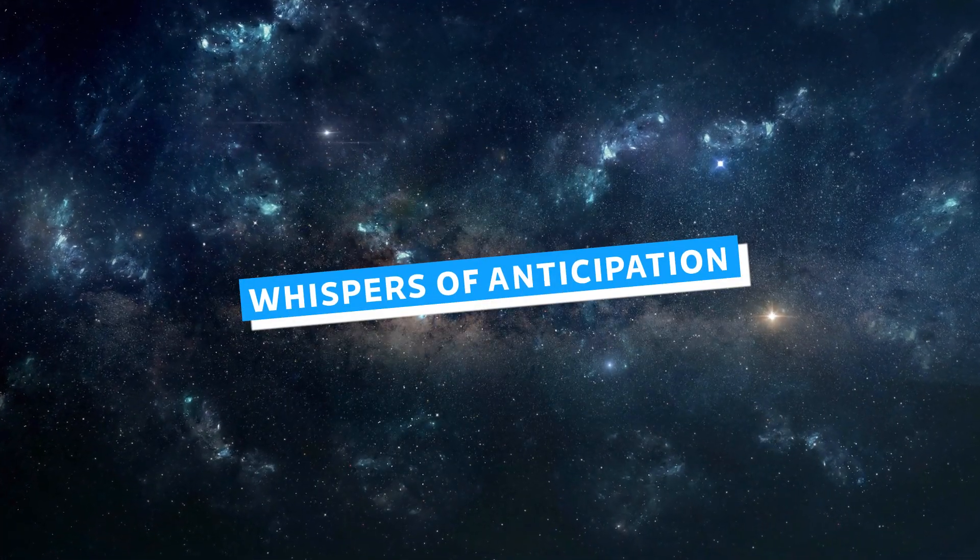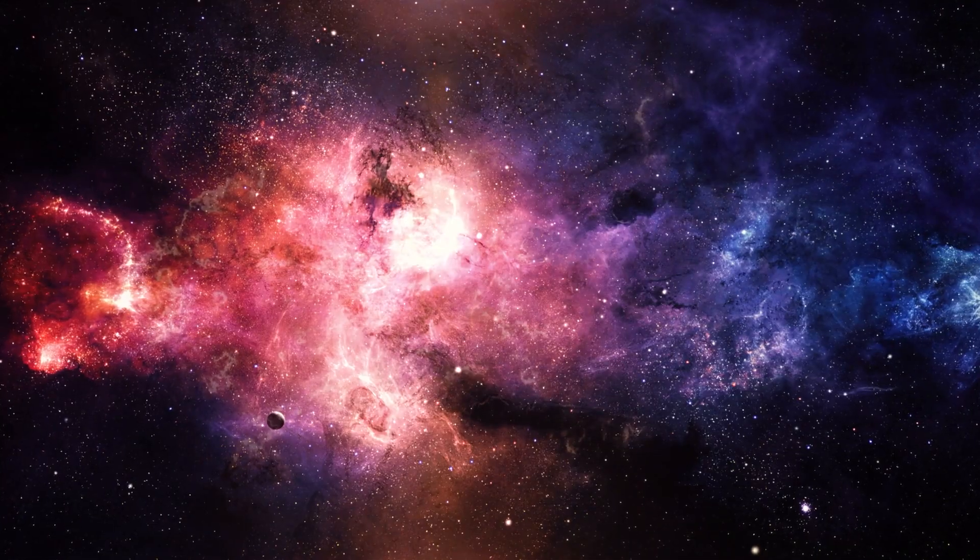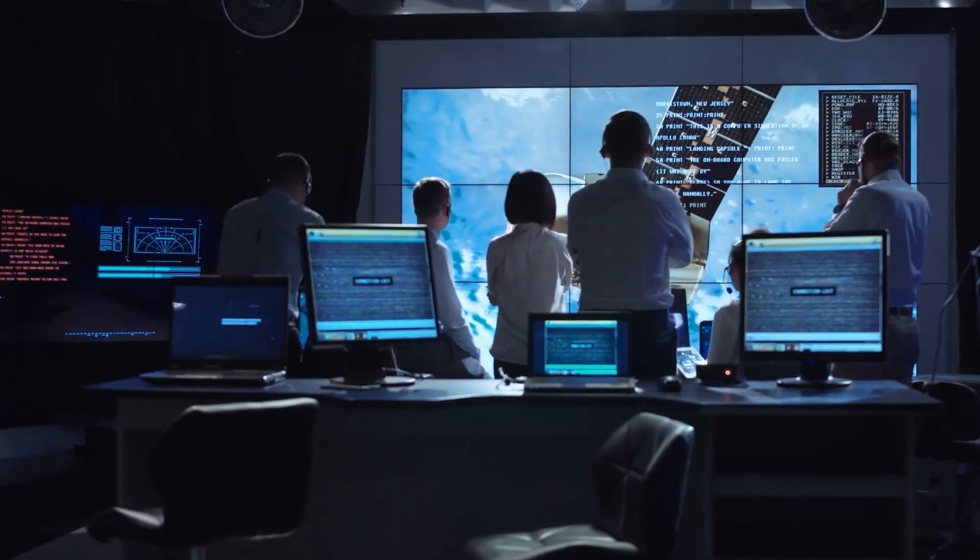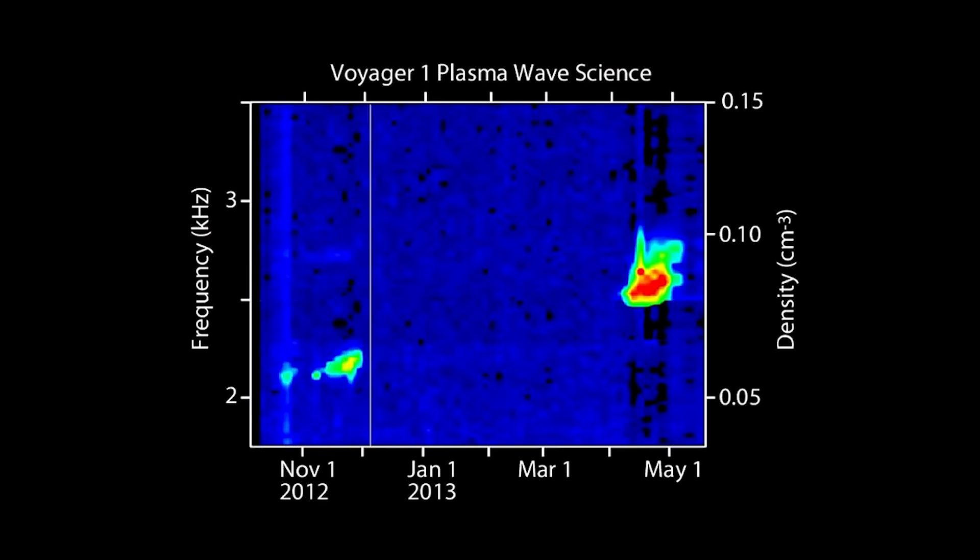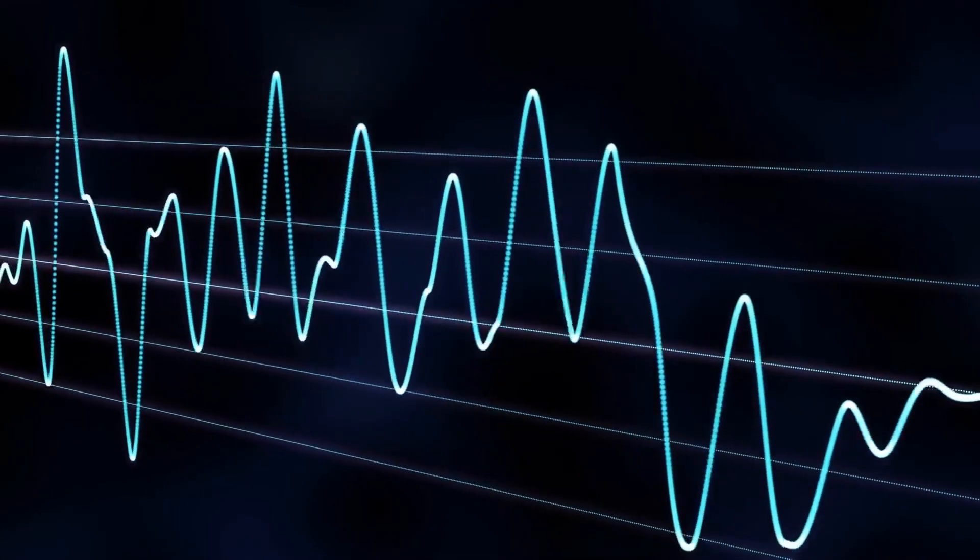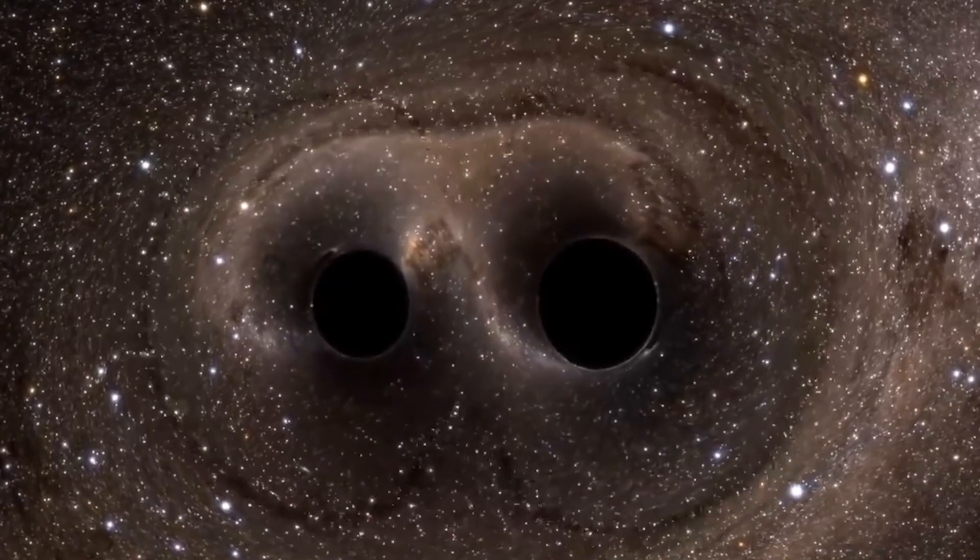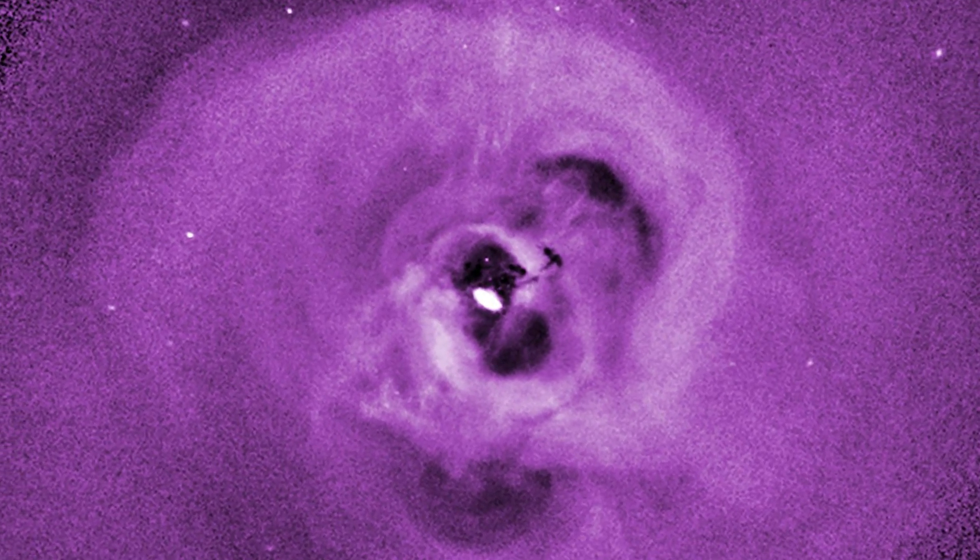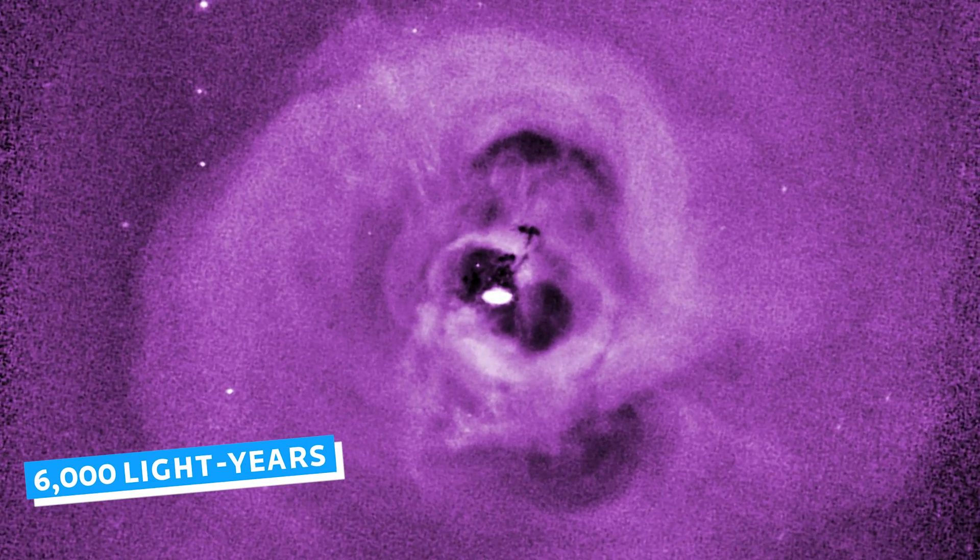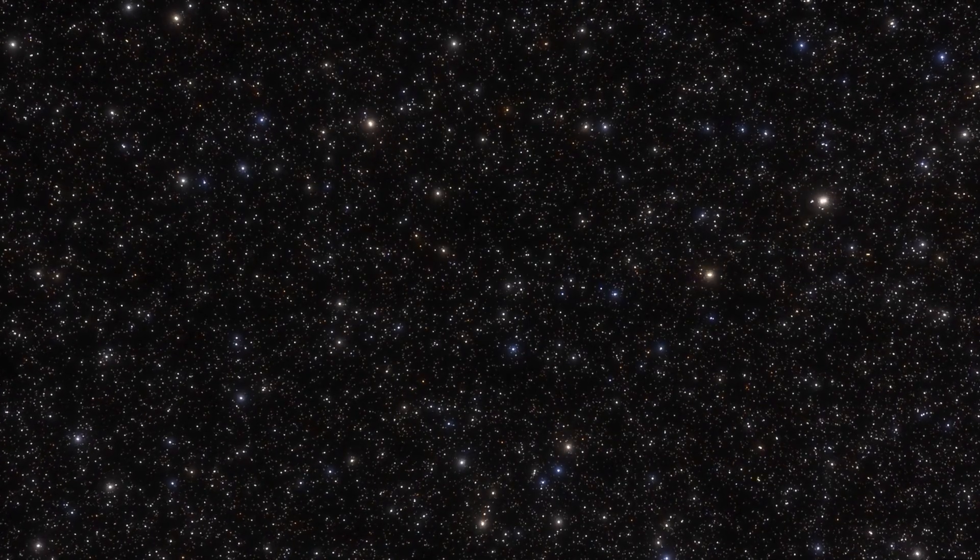Whispers of anticipation. What if there is someone or something out there, waiting in the vastness of the cosmos? NASA has recently unraveled a spine-tingling mystery: the detection of eerie, ghostly sounds emanating from the depths of space. These sounds, reminiscent of moans and wails, have been identified as coming from a black hole located in the heart of the Perseus galaxy cluster, a staggering 6,000 light years away from our own Milky Way galaxy.